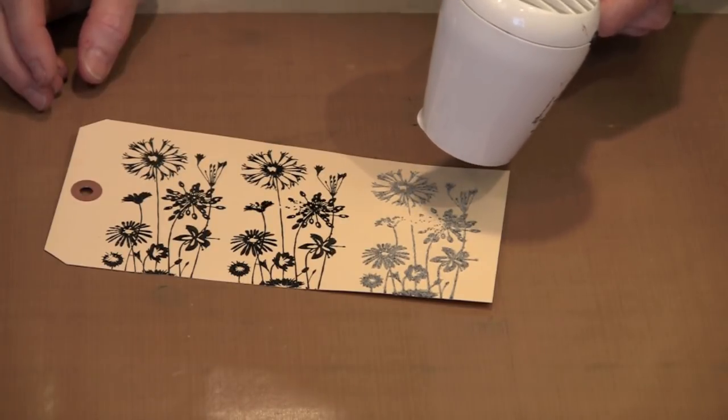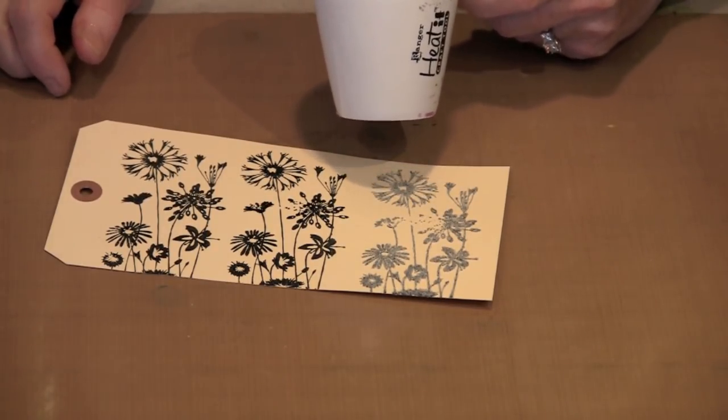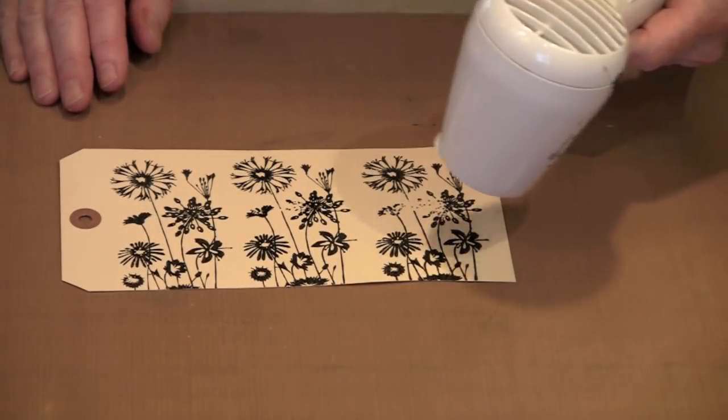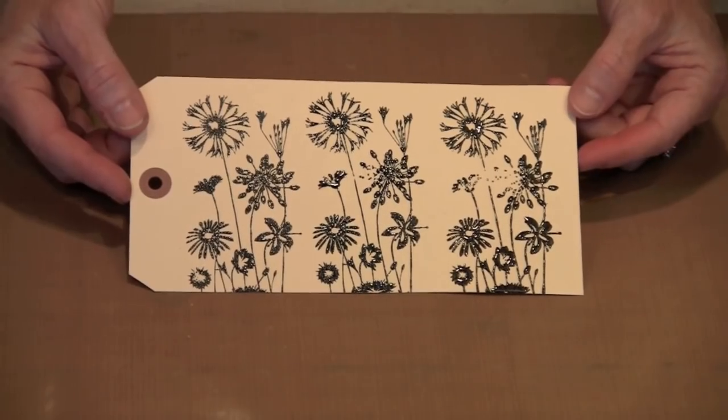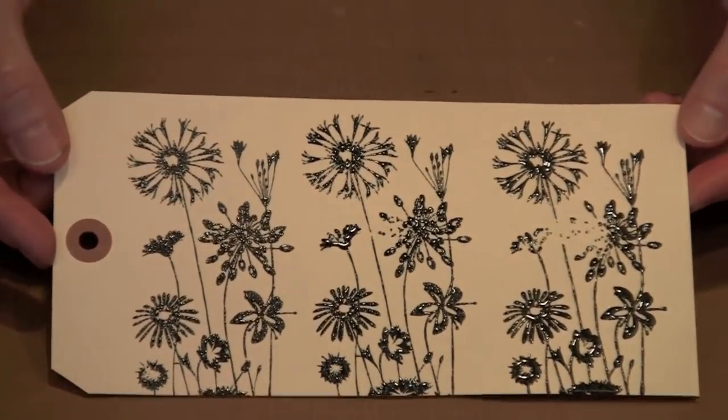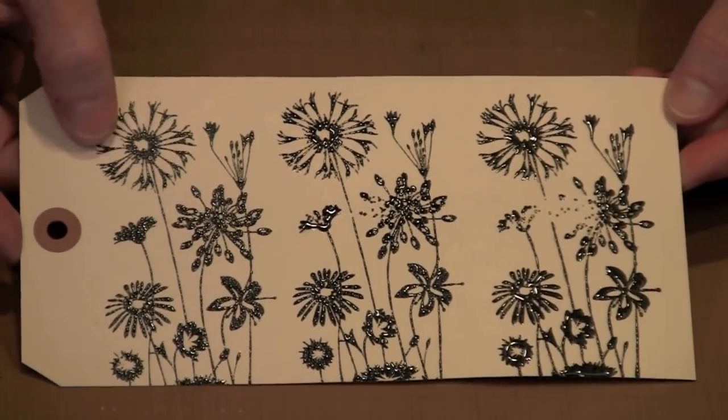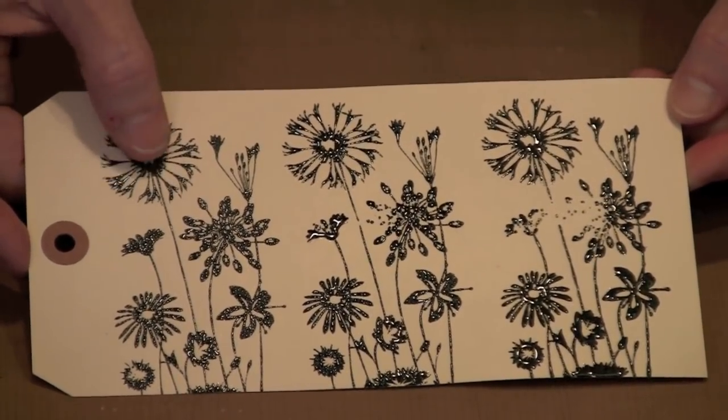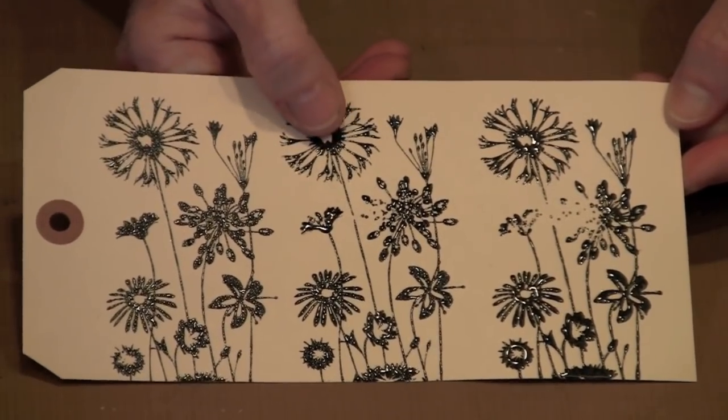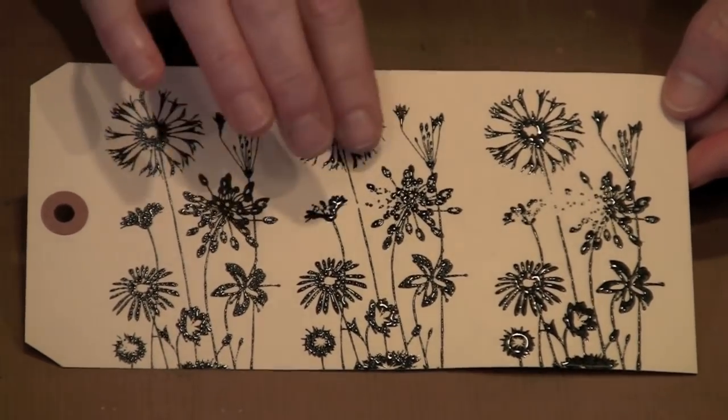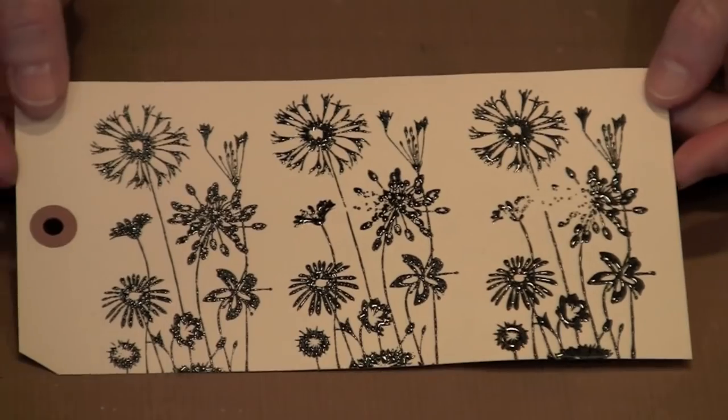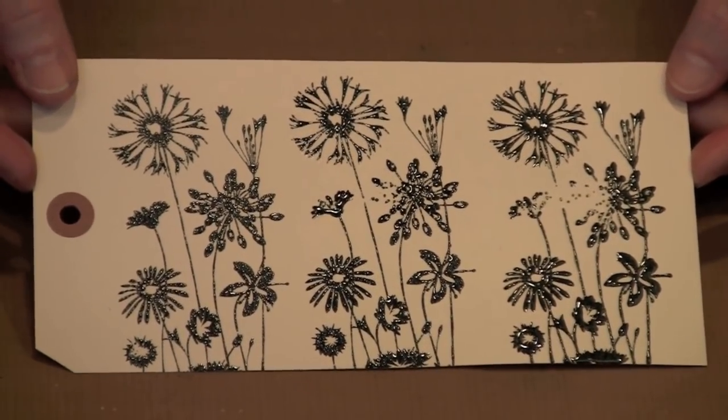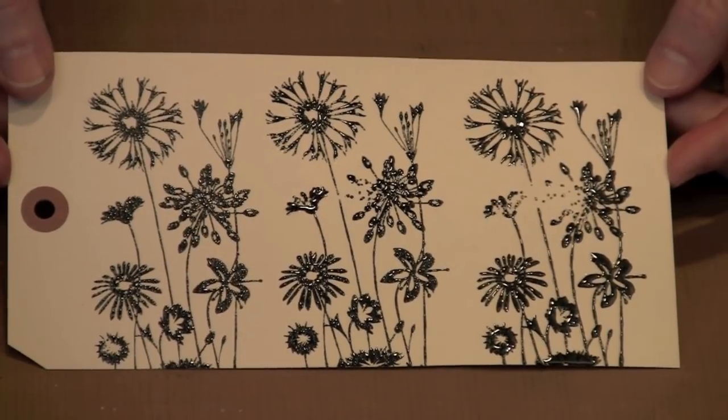Now the UD is going to take a little bit more time because it's thicker granules. The nice thing about the UD is that you get a very thick, very raised design and as you look at this you can see what happens. You get the super fine creates a more detailed, smaller raised effect. The regular, which is kind of your common everyday embossing powder, creates this sort of middle of the road effect and then when you get into the UD you get this really thick raised effect. So here's an opportunity to look at the three different kinds of powders and the different effects that you get from them.